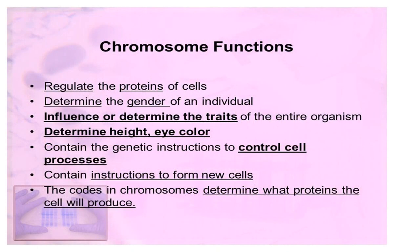Chromosome functions: they regulate the proteins of cells, determine the gender of an individual, influence or determine the traits of the entire organism, determine height and eye color, contain the genetic instructions to control cell processes, contain instructions to form new cells, and the code in chromosomes determines what proteins the cell will produce.